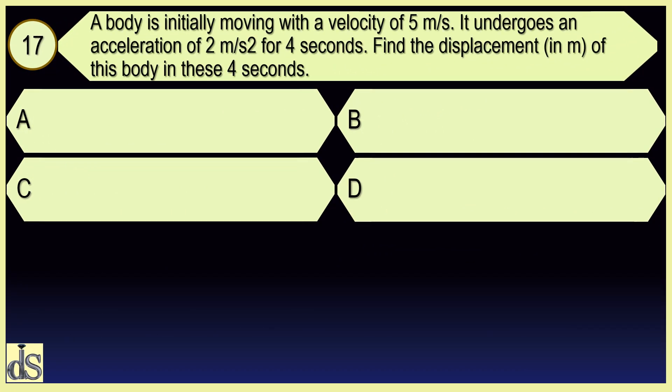A body is initially moving with a velocity of 5 meters per second. It undergoes an acceleration of 2 meters per second squared for 4 seconds. Find the displacement of this body in these 4 seconds. Answer: 36 meters.